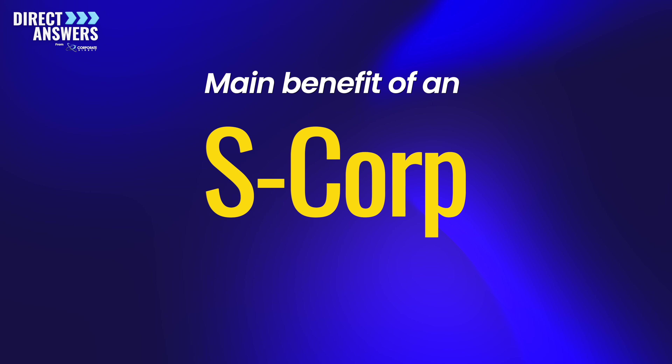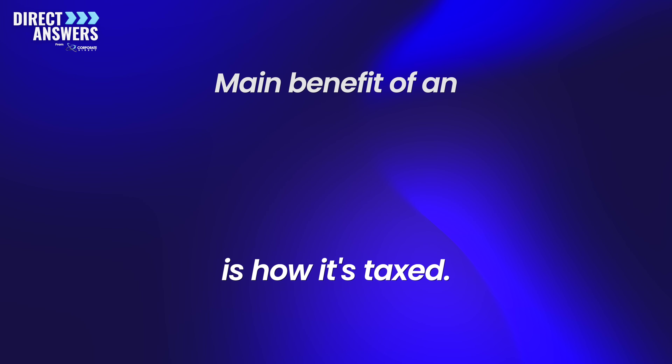The main benefit to setting up an S-Corp is how it's taxed. In a C-Corp, you face two levels of taxation: one at the entity level, where they pay the 21% corporate tax, and then another tax at the individual level if any distributions or dividends are paid out to that individual.